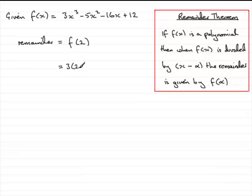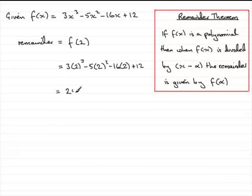Substituting in, you've got 3 times 2 cubed minus 5 times 2 squared minus 16 times 2 plus 12. That gives you 24 take away 20, take away 32, plus 12. Working that out, you end up with minus 16. So the remainder is minus 16 when f of x is divided by x minus 2.